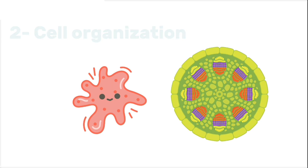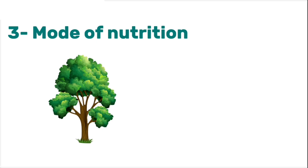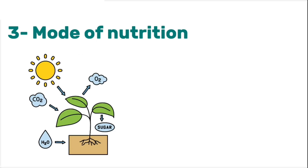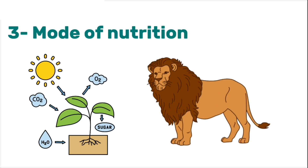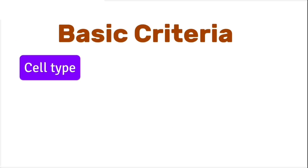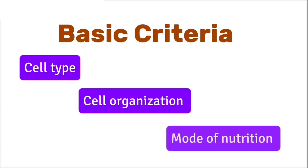Multicellular organisms have specialized cells grouped into tissues and organs. The third and final criterion is the mode of nutrition — how the organism gets its food. Autotrophs can produce their own food, usually by photosynthesis, like green plants. Heterotrophs depend on other organisms for food, like animals, fungi, and many bacteria. These three features — cell type, number of cells, and nutrition style — help us place organisms into the correct kingdom.